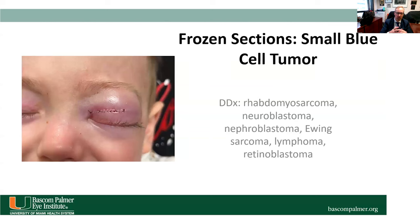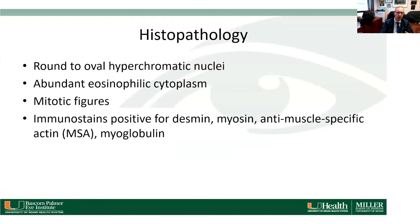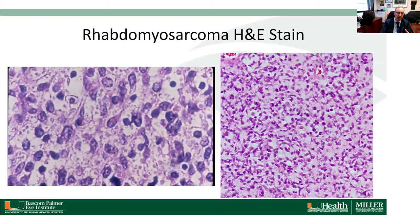We get the patient to pediatric oncology while waiting for the final pathology. The histopathology shows round to oval hyperchromatic nuclei with abundant eosinophilic cytoplasm and mitotic figures. We use immunostains to make the diagnosis. The histopathology shows tadpole-shaped cells with loose eosinophilic cytoplasm and hyperchromatic nuclei, and streaming cytoplasm visible on lower power view.